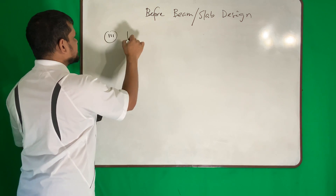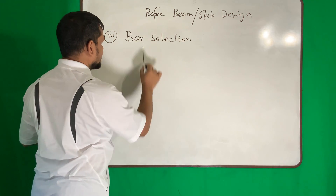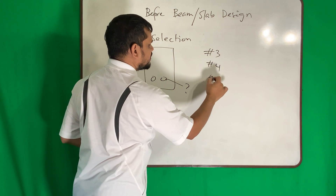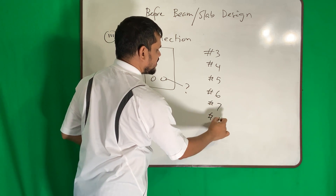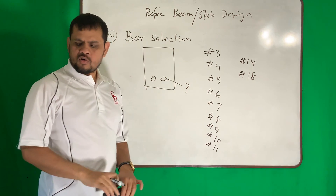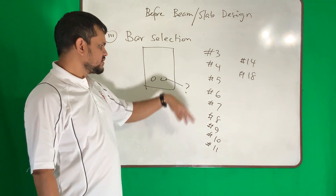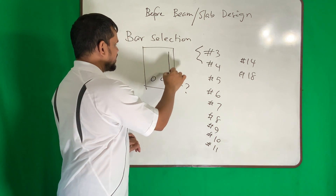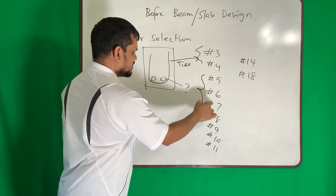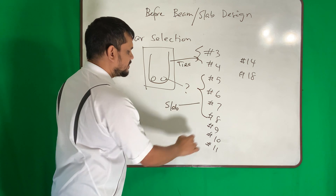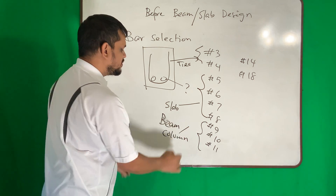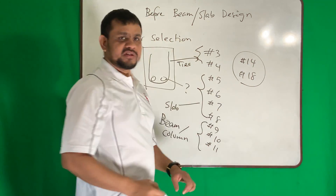Number three is bar selection — which bar number will you select? Available bar numbers are: #3, #4, #5, #6, #7, #8, #9, #10, #11, #14, and #18. Bars #3 and #4 are typically used for ties. Bar #3 is also commonly used in slabs. Bars #5 through #10 are commonly used in beams or columns.